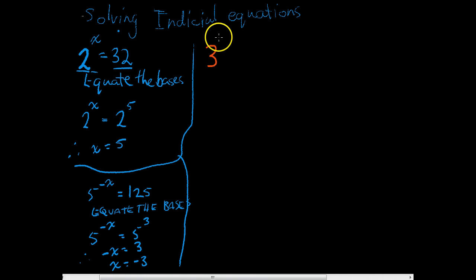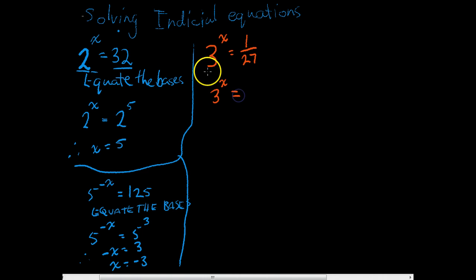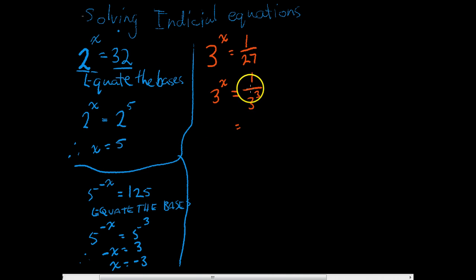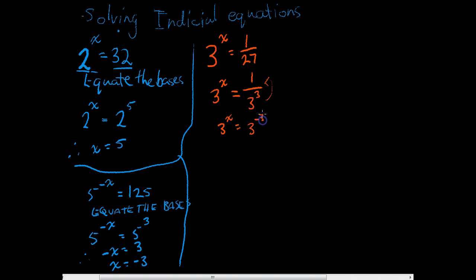Let's look at another one: 3 to the power of x equals 1 over 27. This is a little bit different. We can still equate the bases — 1 over 27 is 1 over 3 to the power of 3. We can move this to the top of the fraction simply by making the index negative. So 3 to the power of x equals 3 to the power of negative 3. Therefore x equals negative 3.